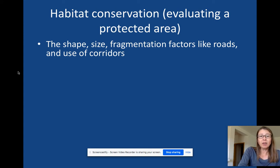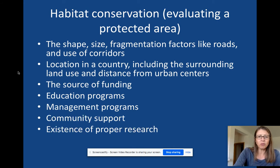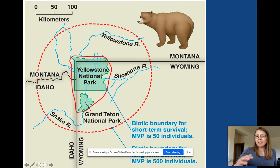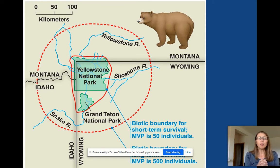The first thing to think about is size, shape, fragmentation, roads, and corridors. If you're looking at a protected area, you want to think about its actual shape because you want to minimize the edge effect as much as possible. Here's Yellowstone National Park — there's actually another national park nearby. The bigger the protected area, the better, because certain organisms might have a really big range. Whether it's a grizzly bear, a jaguar, or a panda, the larger the protected area, the more resources and productivity it has, and it can support more biodiversity.